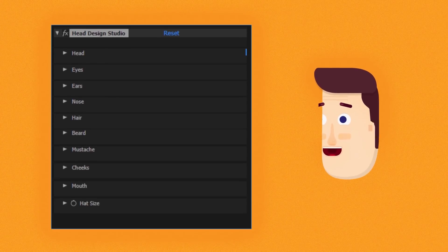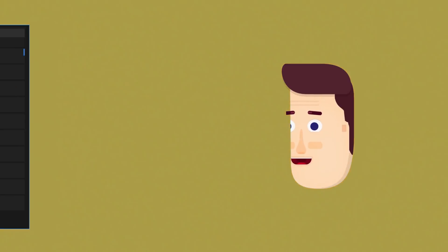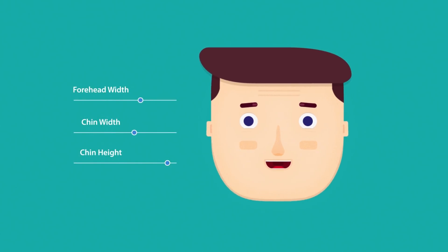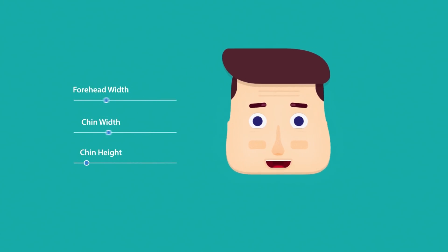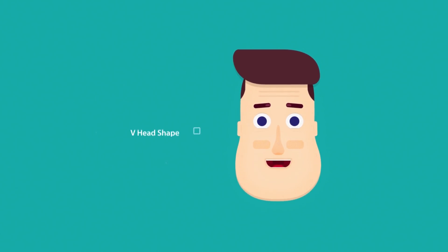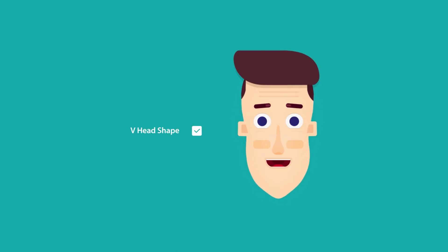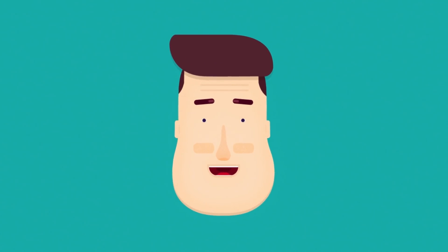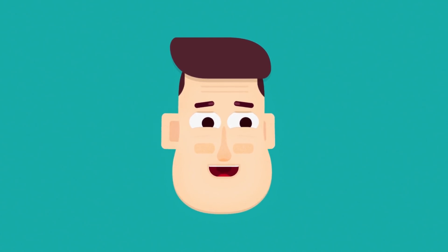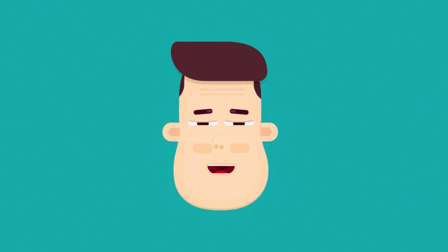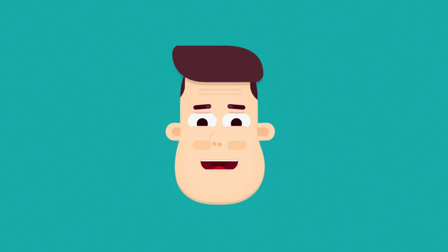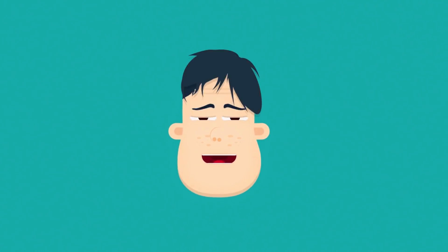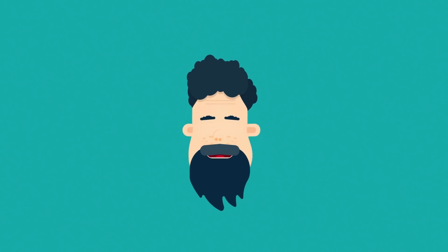With the Head Design Studio, you can control the forehead and chin separately, allowing you to create any head shape. Change eyes, ears, nose, mouth, and even cheeks. Modify its hair, beard, and mustache.